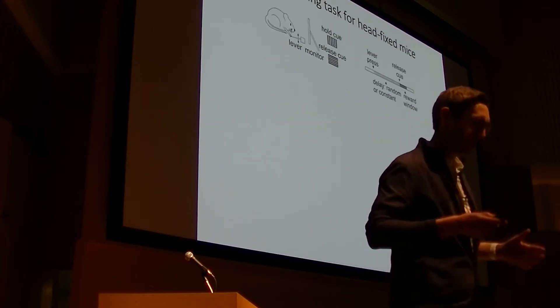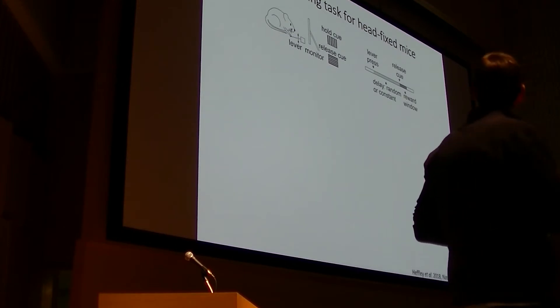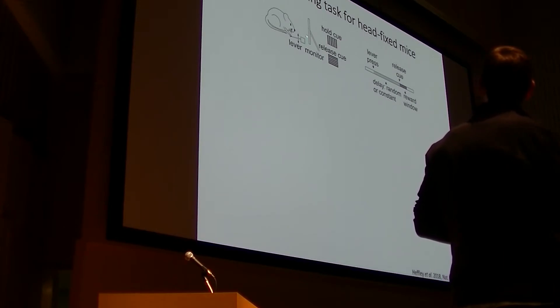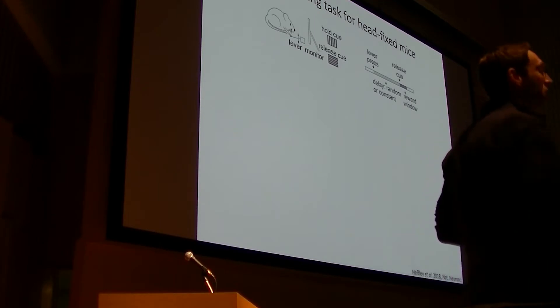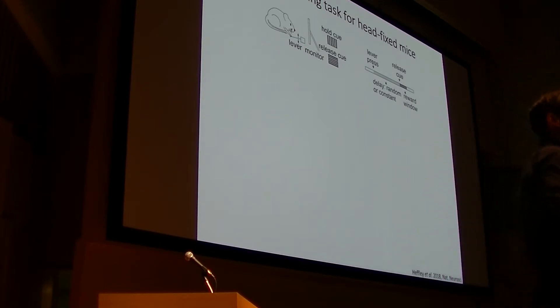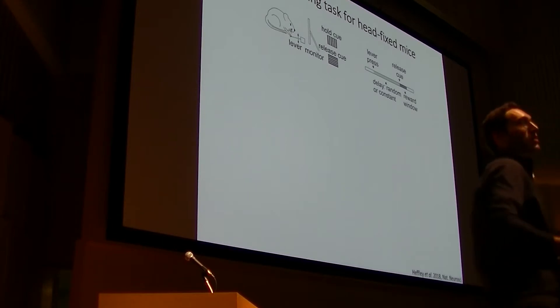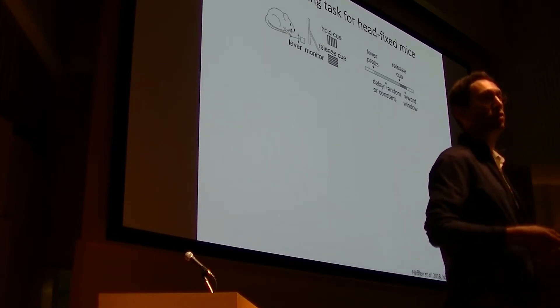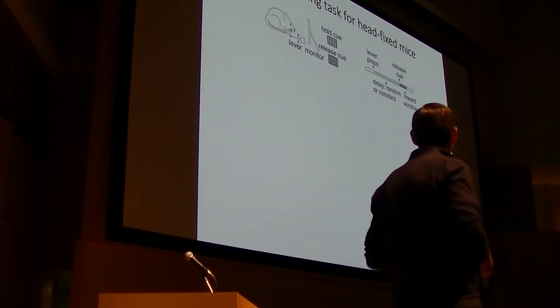Okay, so here's the first behavior. We're using mice, they're head-fixed, and they are seated in front of a lever and video monitor. And what the mice have to do is depress the lever at a time of their choosing, and they're viewing a bar of a grating on this monitor, and the job is simply to wait until that bar of the grating changes 90 degrees to horizontal, at which point they have one second to release the lever for a sugar water reward.